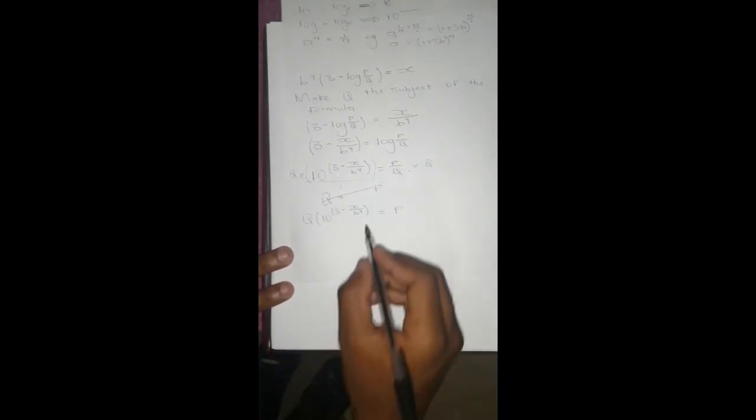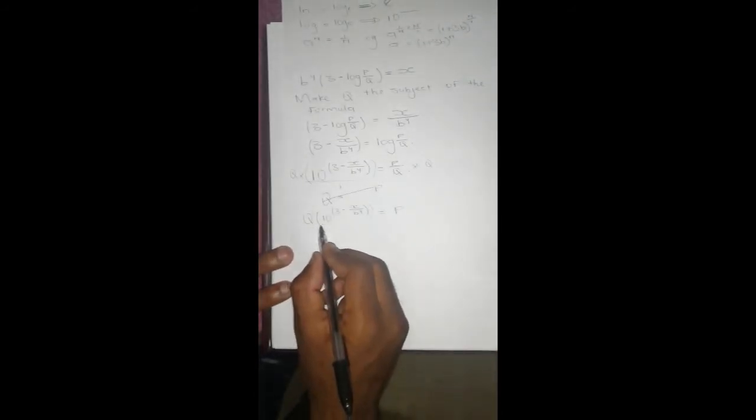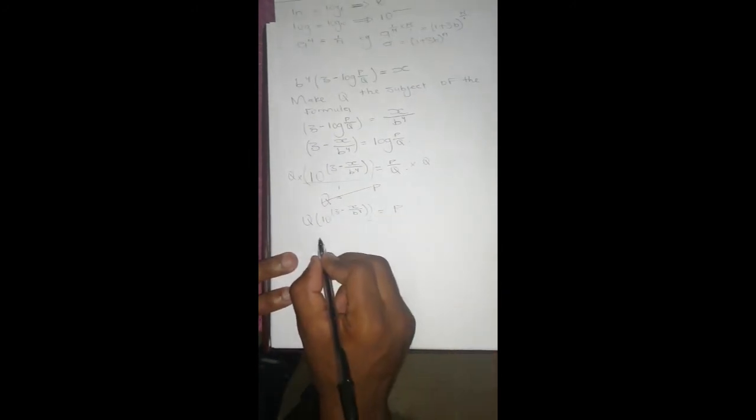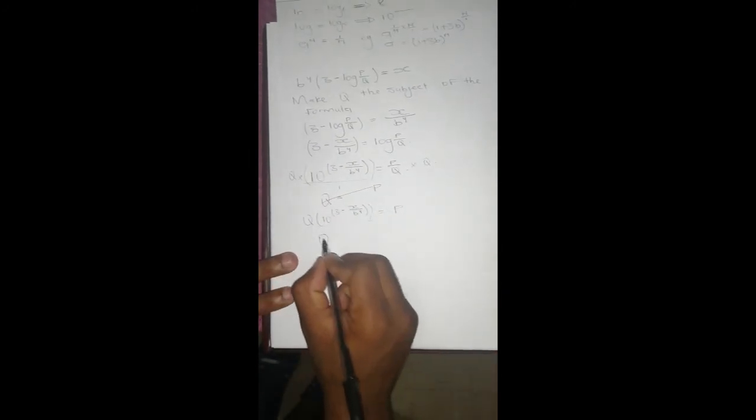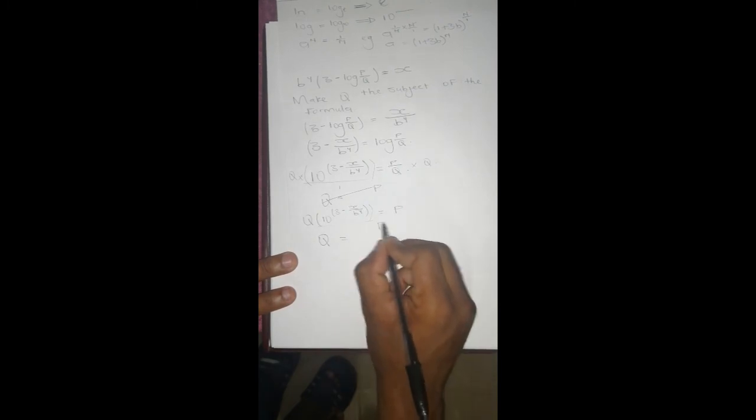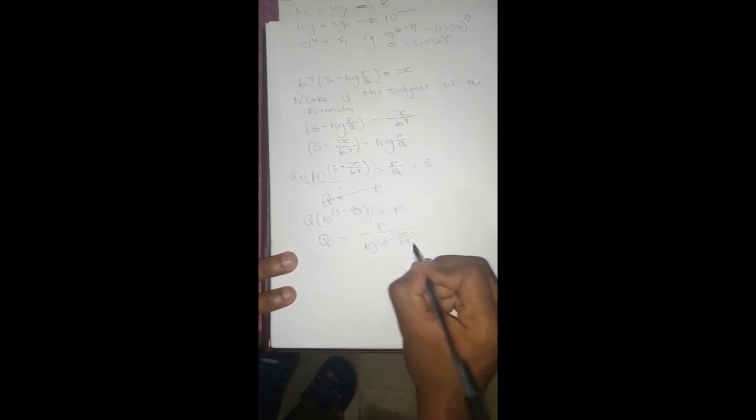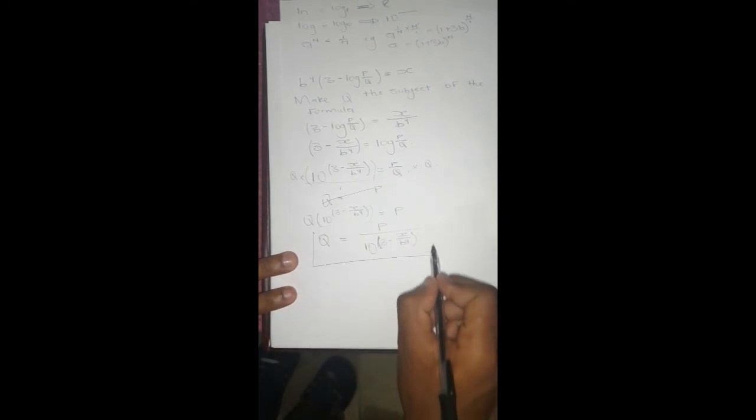So we want q to be the subject of the formula. So we will be going to divide everything by this. Then this side will be left with q. So it's going to be q equals to p, then when dividing the other side will be left with 10 to the power 3 minus x over b to the power y.